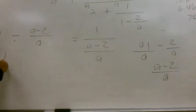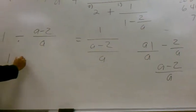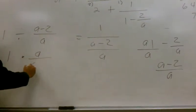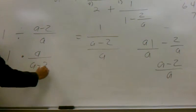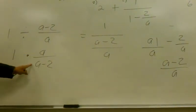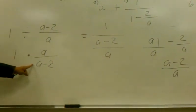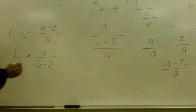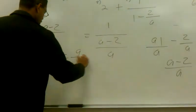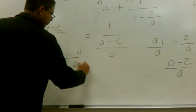So we're going to do 1 times the reciprocal, which is a over a minus 2. Now, what is 1 times something? It's that itself. So this is really equal to a over a minus 2.